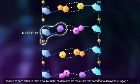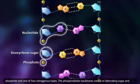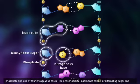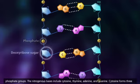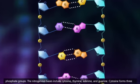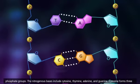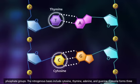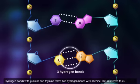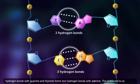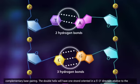Nucleotides are molecules that consist of a deoxyribose sugar, a phosphate, and one of four nitrogenous bases. The phosphodiester backbones consist of alternating sugar and phosphate groups. The nitrogenous bases include cytosine, thymine, adenine, and guanine. Cytosine forms three hydrogen bonds with guanine, and thymine forms two hydrogen bonds with adenine. This is referred to as complementary base pairing.